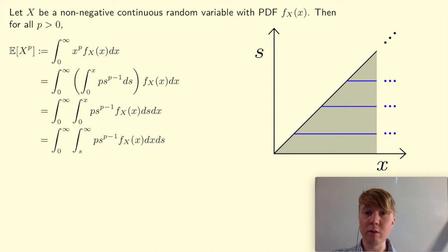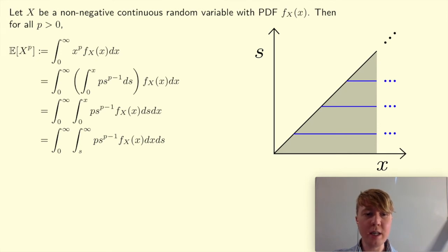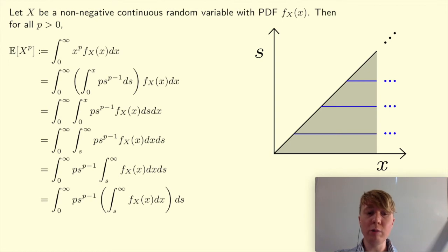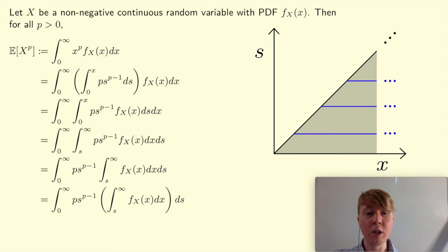For the outer integral, the limits are between 0 and infinity: s varies between 0 and infinity, and for each fixed value of s, x goes between s and infinity. What's nice here is that p times s to the p minus 1 doesn't depend on x, so you can take it out of the inner integral. Then you can see we're integrating the pdf over the region where x is greater than or equal to s, which equals the probability that random variable X is greater than or equal to s. And that gives us the formula we set out to prove.